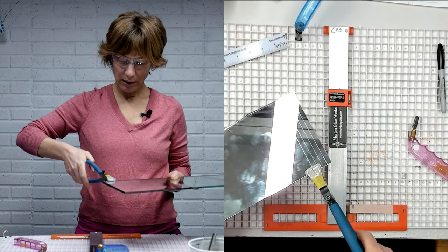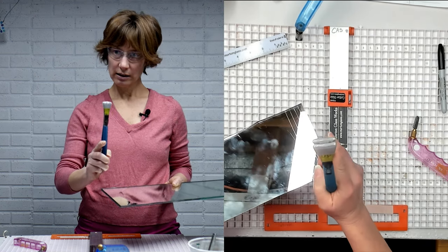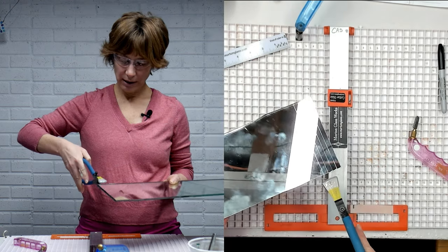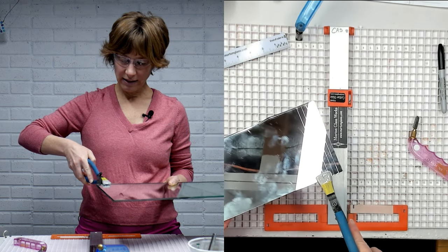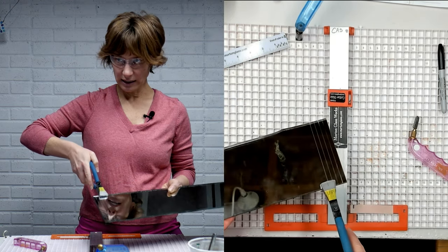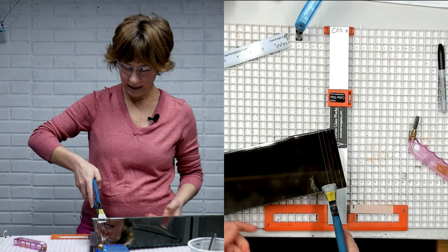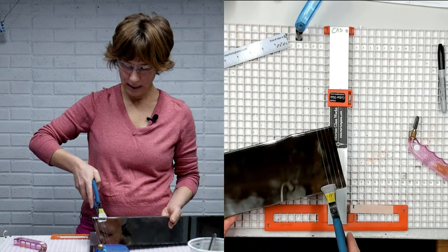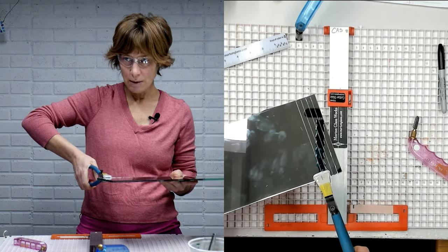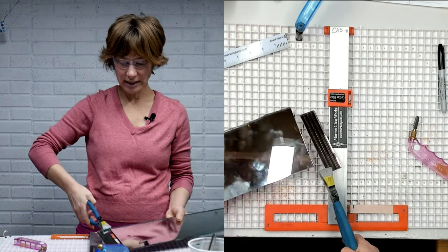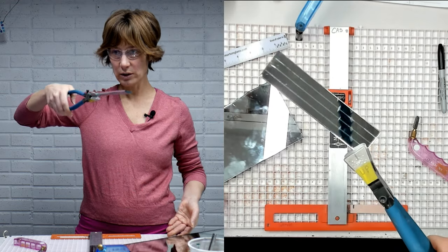To break them, I put my running pliers right on that line. And that line on the running pliers is going to line up right with the score line that I'm trying to break. The screw is going to be up. And this allows me to push up underneath and down on either side to break the glass right where I told it to.